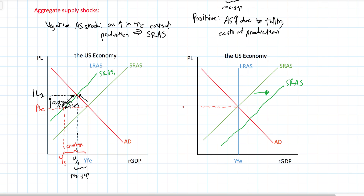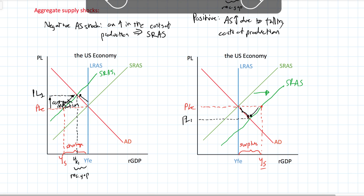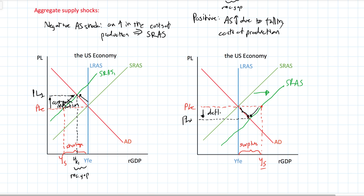Assuming the price level remains at PLE, if it did not fall following the increase in aggregate supply, we would have a quantity of output supplied, YS, that is greater than the quantity of output demanded — surplus output. Just as in microeconomics, if there is a surplus the price must fall; in macro, the price level must fall. As it does, households, firms, the government, and foreigners demand a greater quantity of output and we achieve a new equilibrium at PL2. This could be deflation, or depending on the prior inflation rate, disinflation. We achieve a new equilibrium level of national output at YE1.